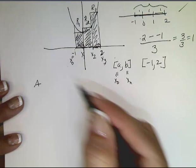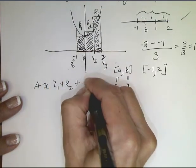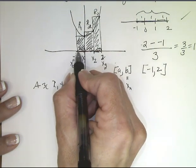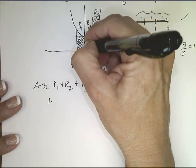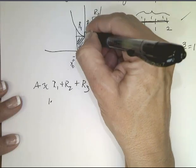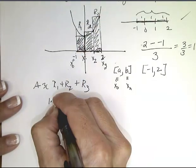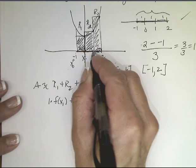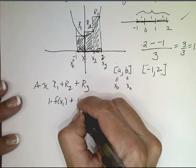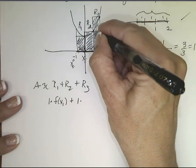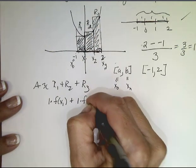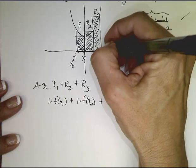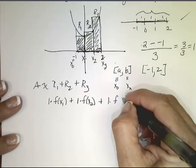The area is about the sum of those areas. The area of the first rectangle is the base — which is 1 — times the height, which is the value of the function at x₁, so f(x₁). Rectangle 2 has the same base of 1, times f(x₂). And R₃ is 1 times f(x₃).